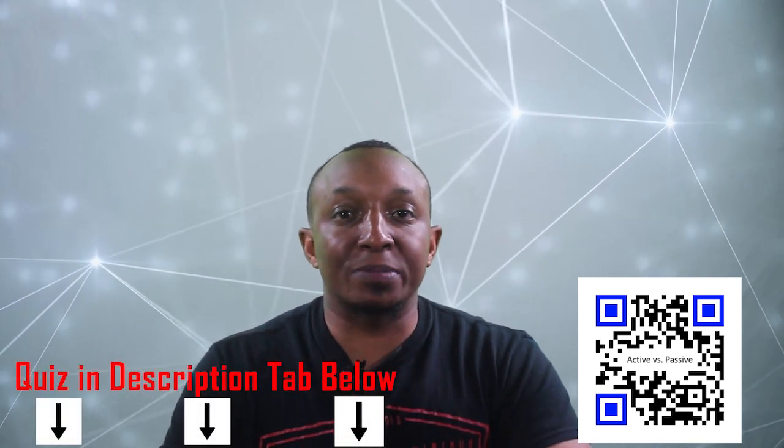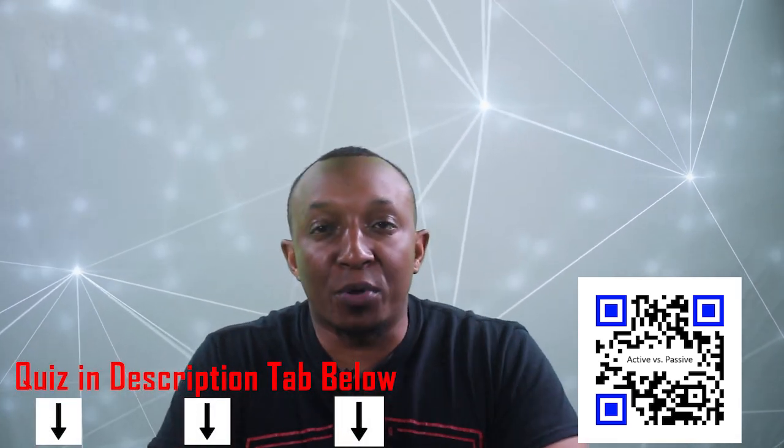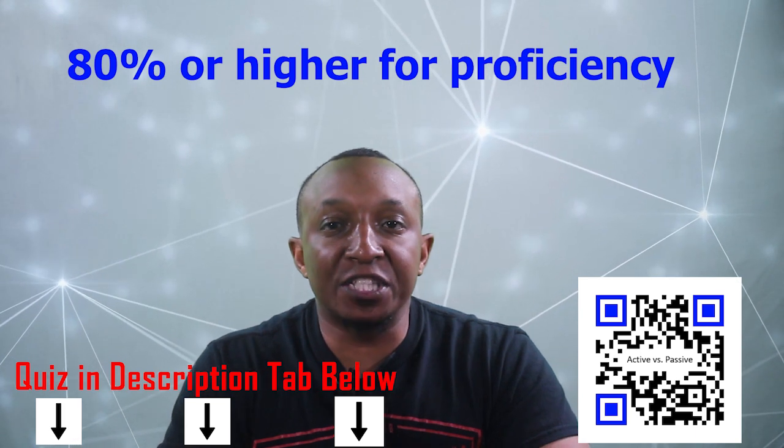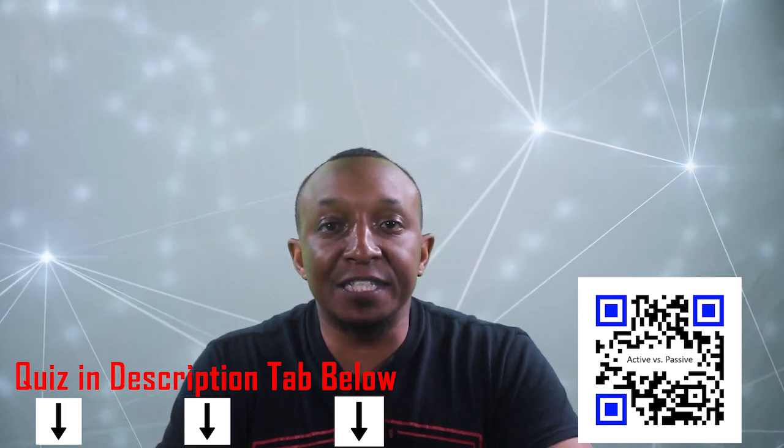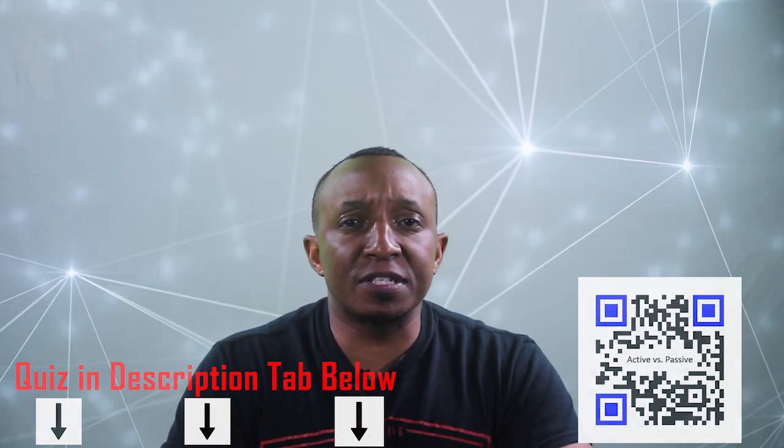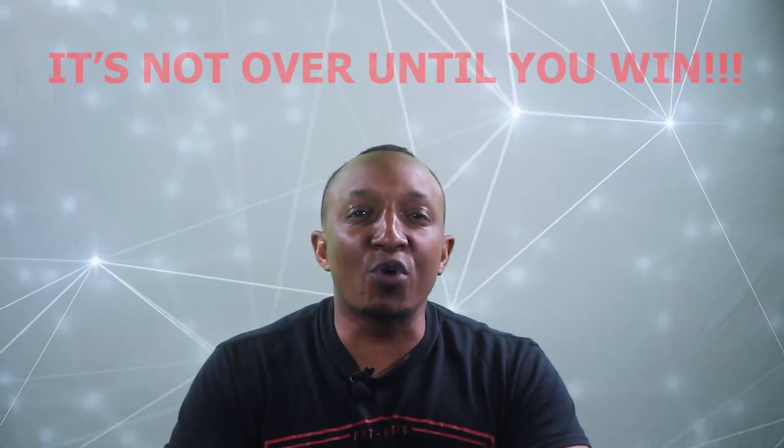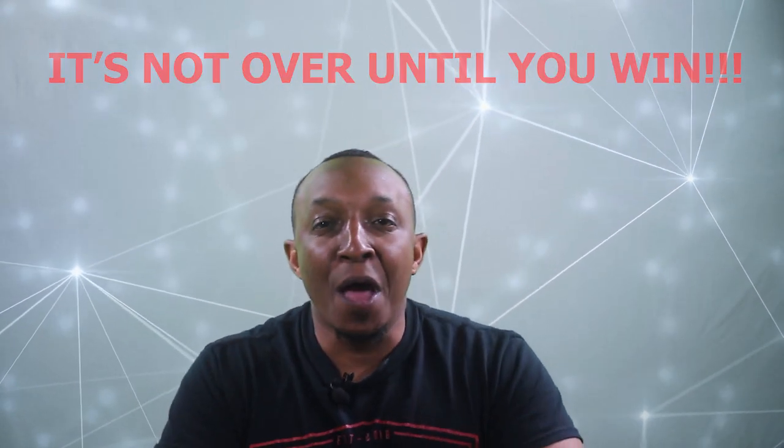Now let's test your knowledge on the role of active and passive transport in maintaining cellular homeostasis. Use your electronic device to scan the QR code at the bottom right of the screen or you can click the link in the description tab below the video. Remember 80% or higher for proficiency, record your results on your proficiency sheet and if you don't get it the first time, try again because it's not over until you win. Peace and have a positive, productive day.